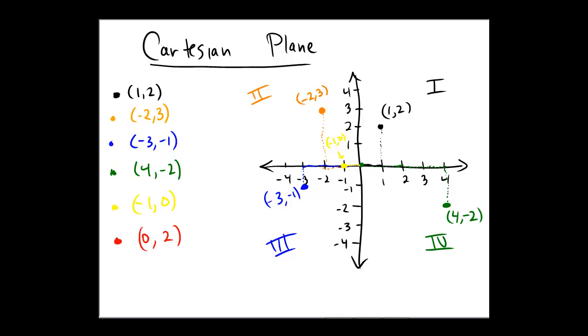And so the last example would be 0, 2. And similarly, that one's not going to land in one of the quadrants either. It starts at the origin. No moving left to right, but going straight upwards. To there, 0, 2, we would say lies on the y-axis.